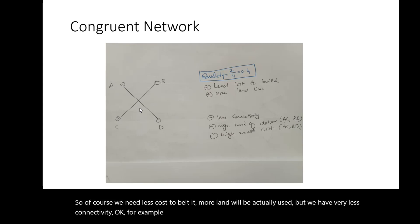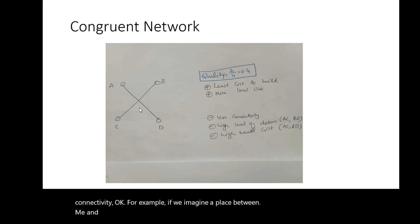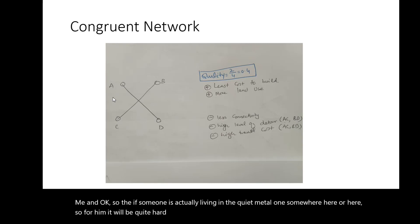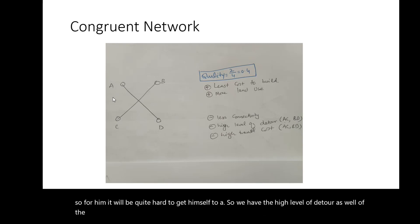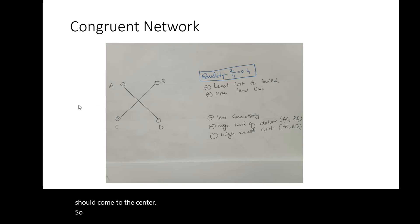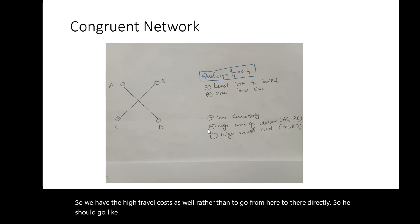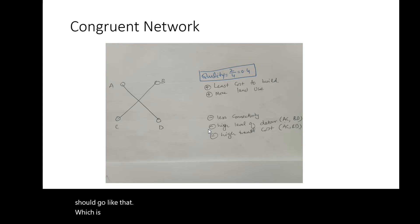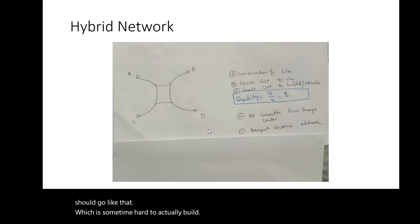For example, if someone is living somewhere between B and D, it will be quite hard to get to node A. We have a high level of detour between sections A to C and B to D. For example, if someone would like to travel from C to A, they must come to the center first, which results in high travel cost rather than going directly.